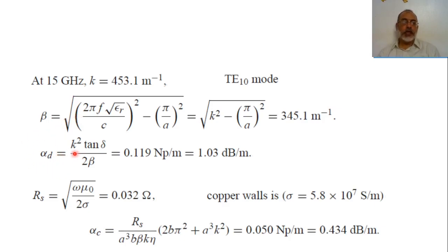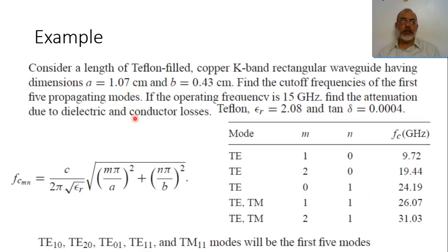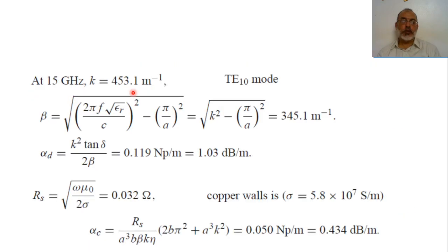The dielectric attenuation alpha-d is K² · tan(delta) over 2·beta. Beta is obtained from sqrt(K² − Kc²), where K = omega · sqrt(mu·epsilon) = 2·pi·F · sqrt(epsilon_r) / C. Using F = 15 GHz, epsilon_r = 2.08, and A = 1.07×10⁻² m, beta is computed as 345.1 rad/m, and from K, tan(delta) = 0.0004, and beta, the dielectric attenuation coefficient is calculated in Np/m.